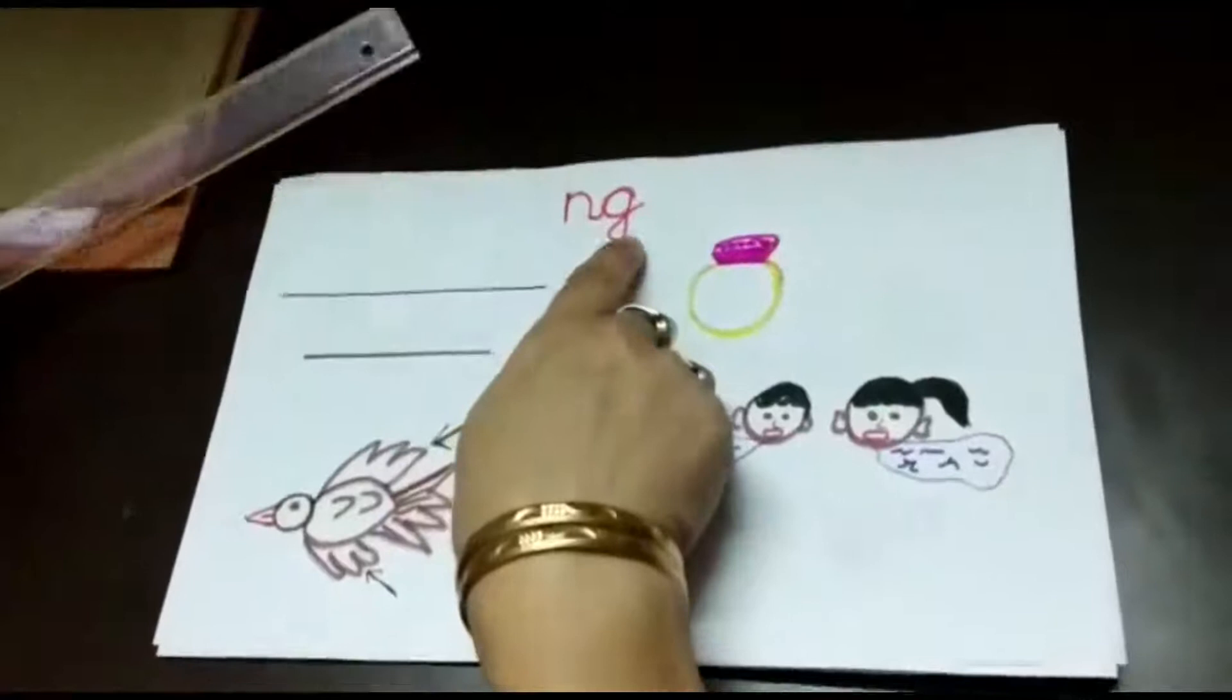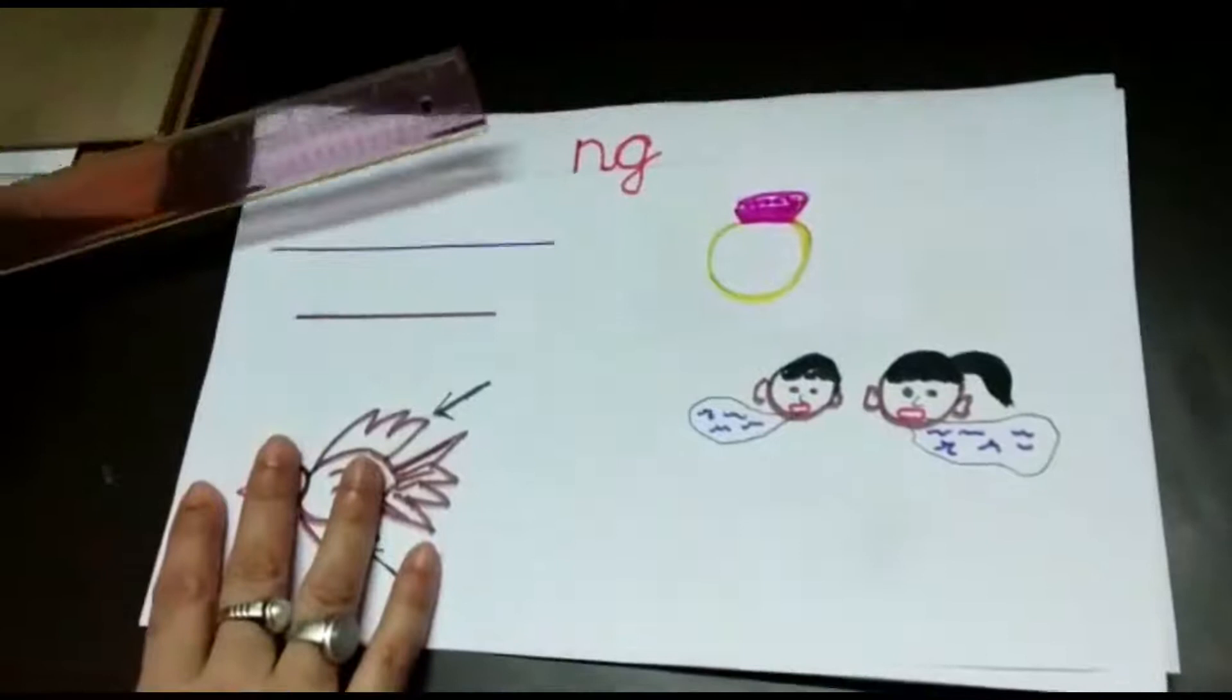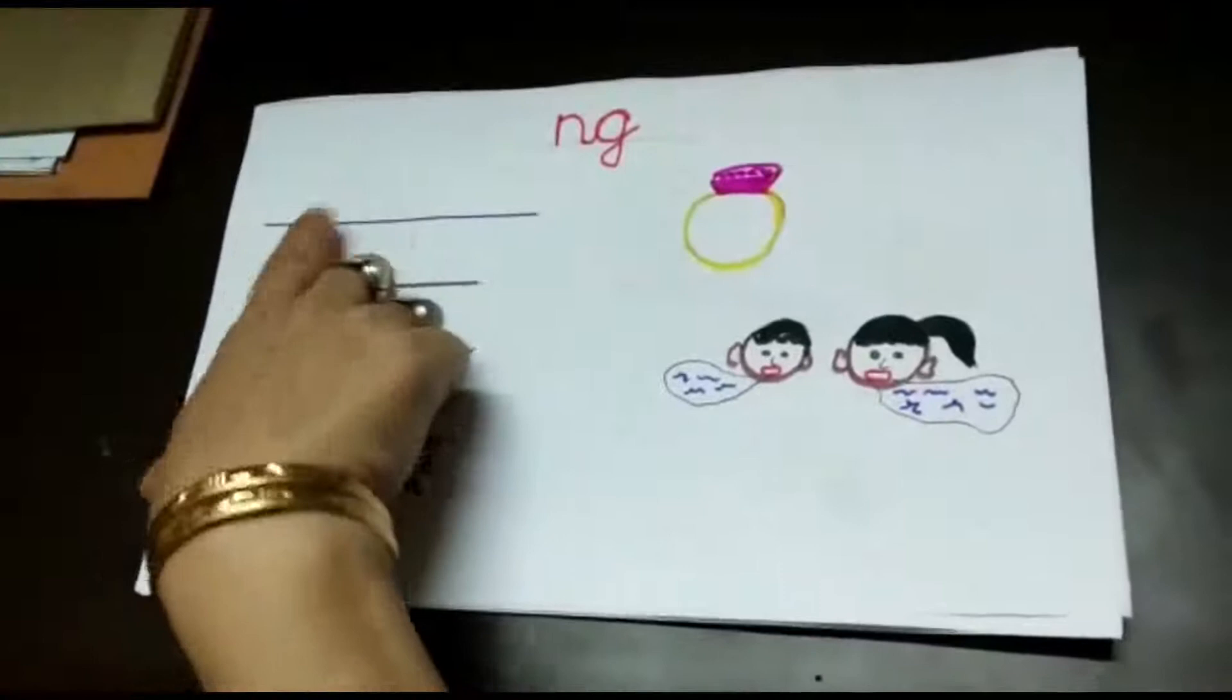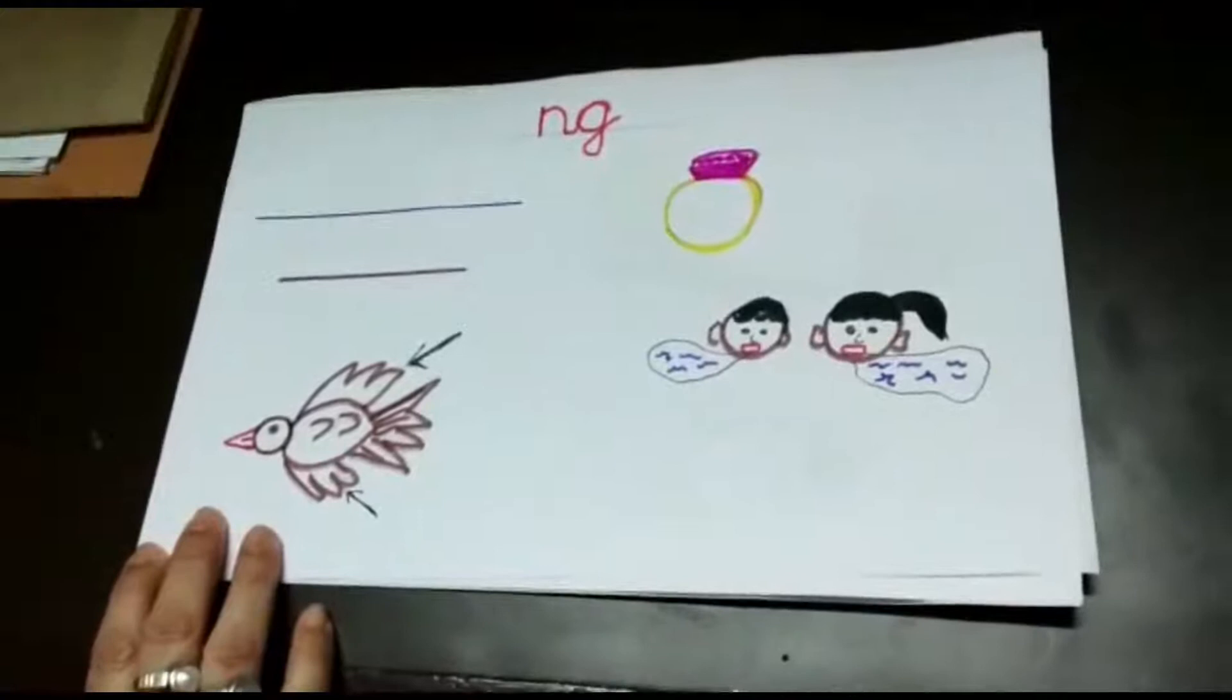These are ng blend sounds that will come at the end of the word. Now I have some pictures before me. This is a line and this is also a line, so the purple line is...